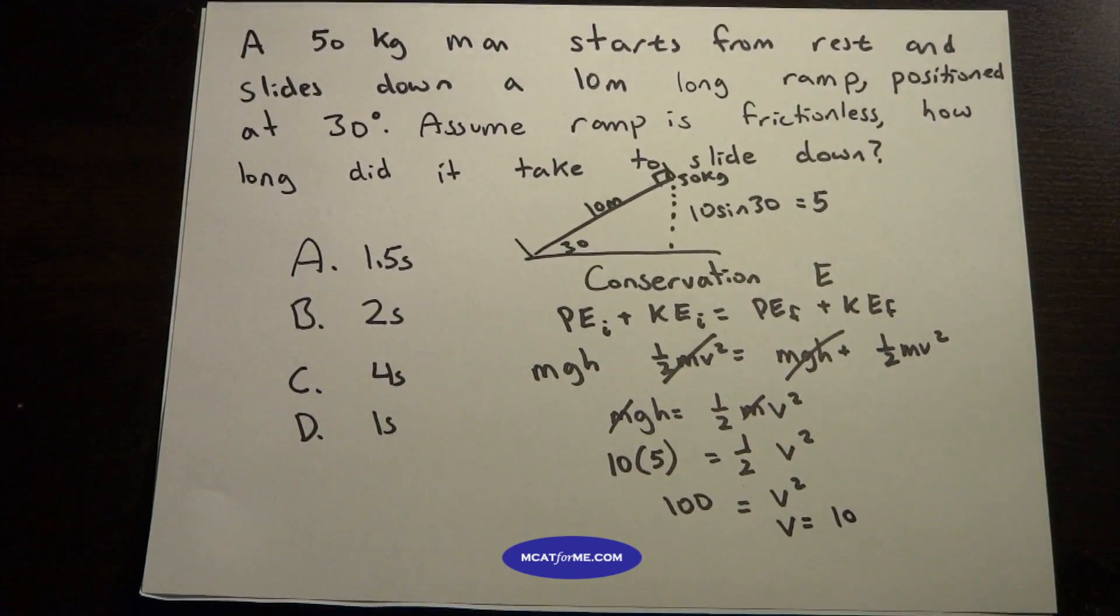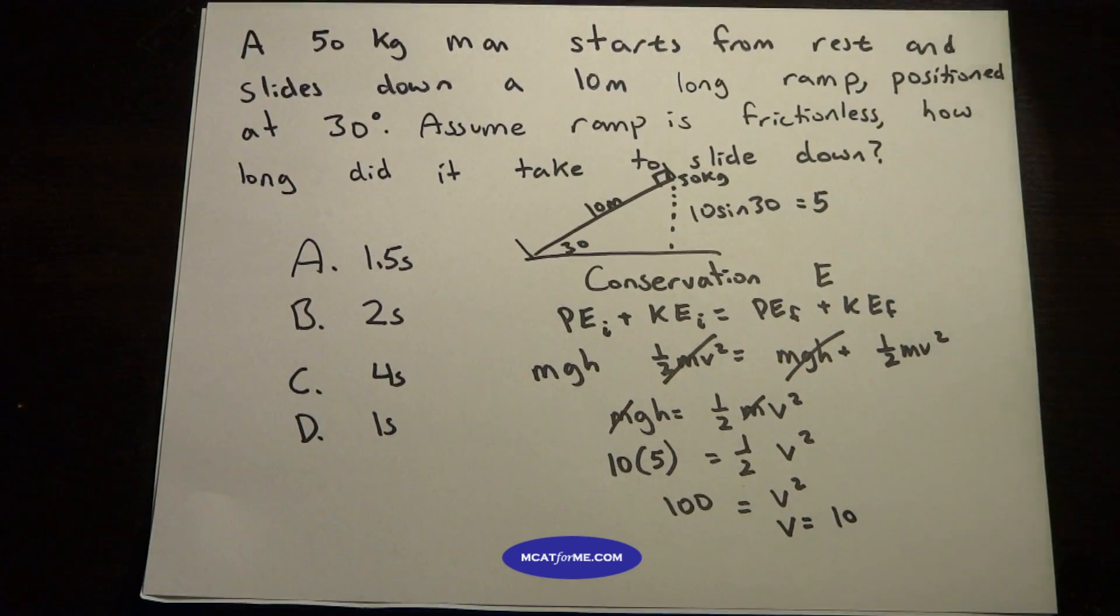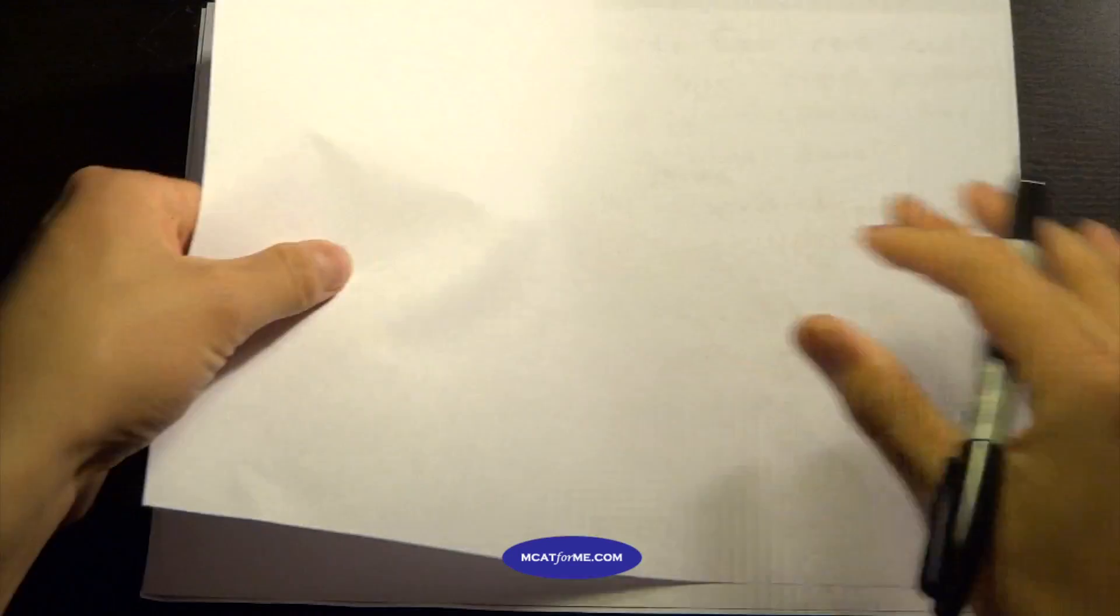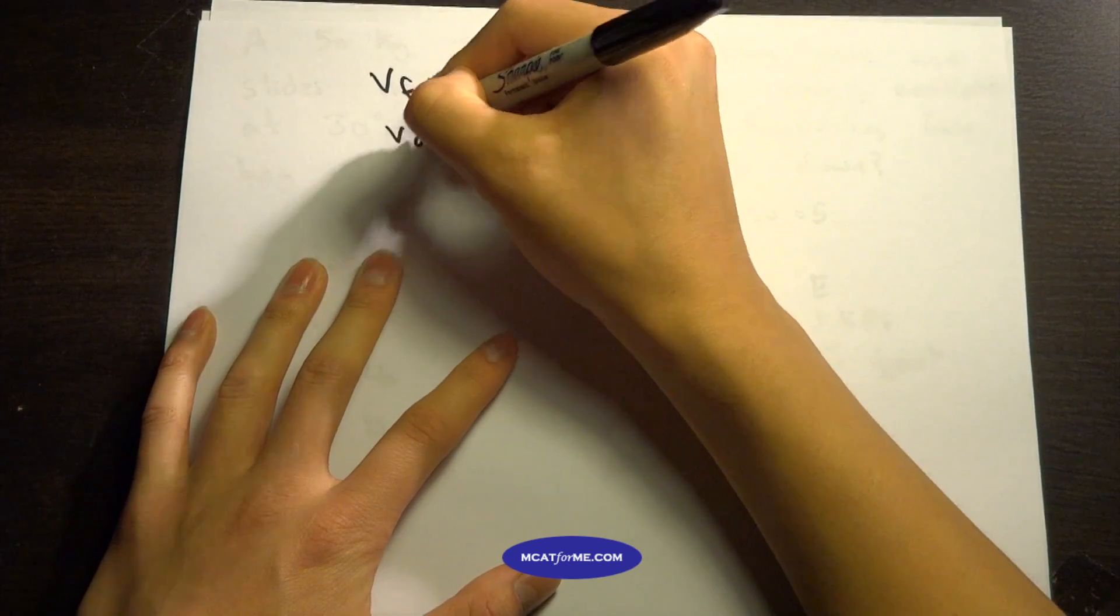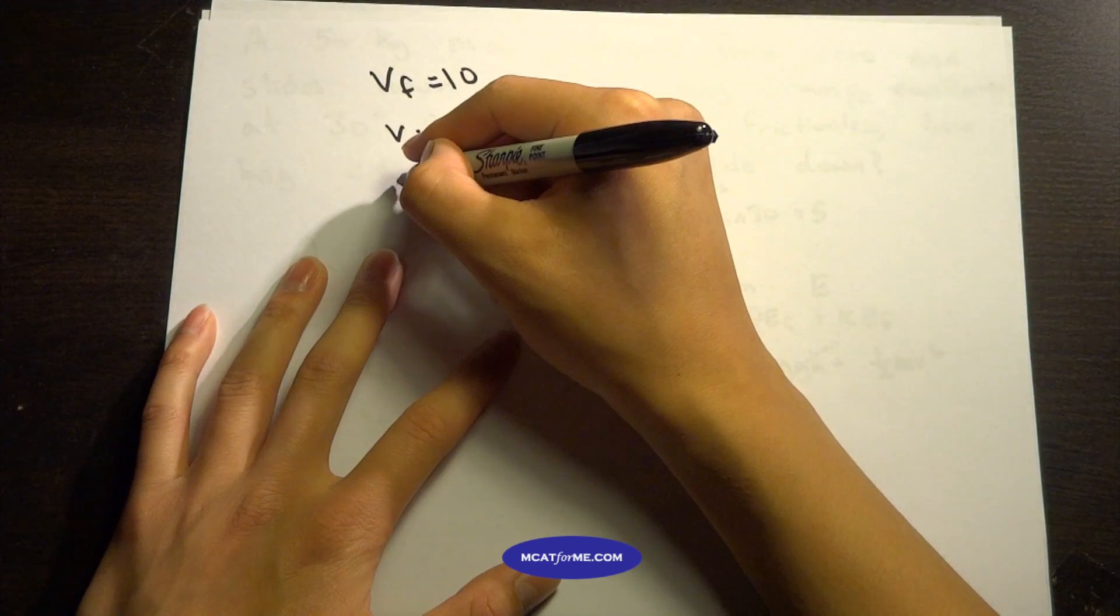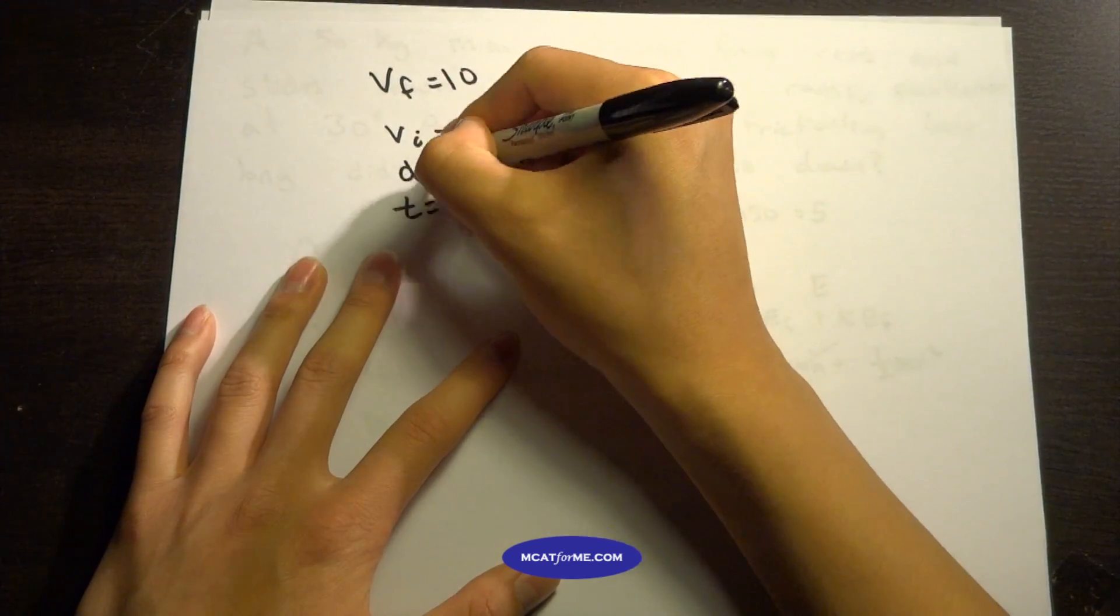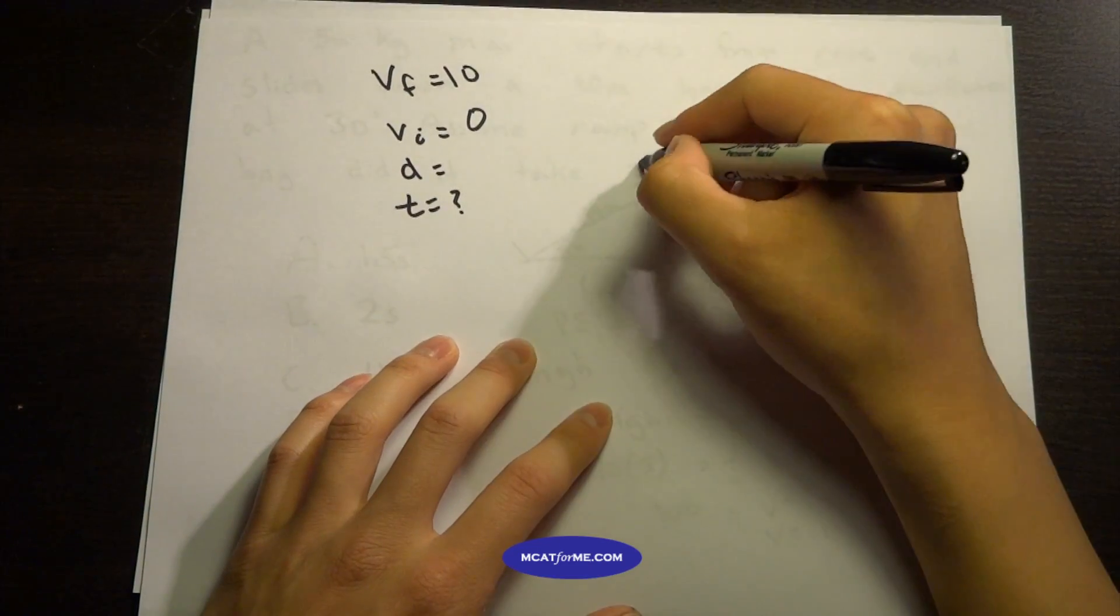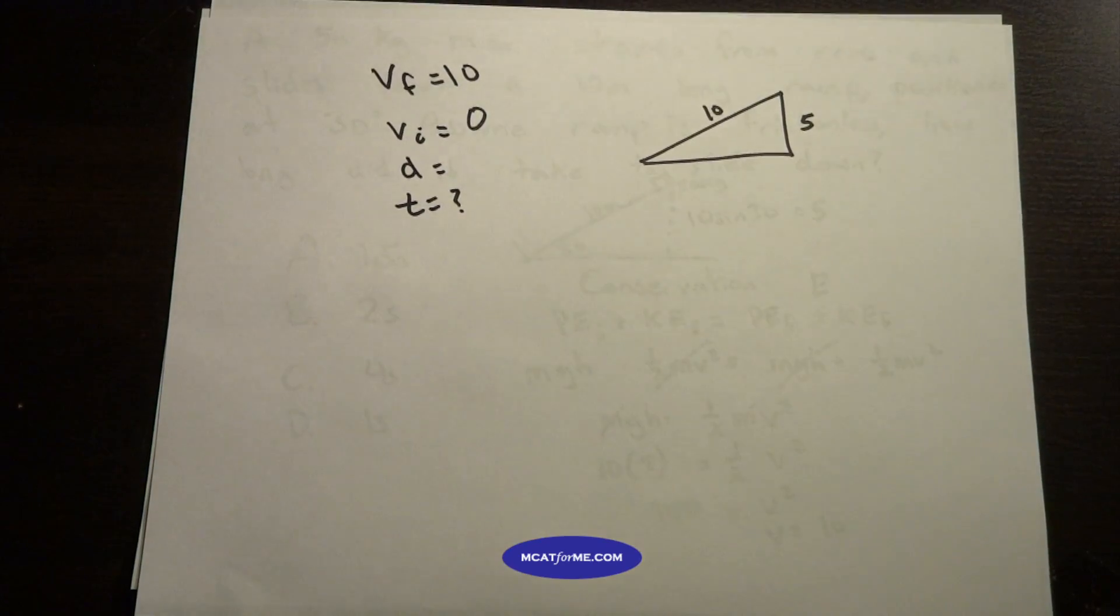So what do we do with this information? We have that v final equals 10, and we have v initial equals zero—we remember he started from rest. We want to find the time. What other piece of information do we have? Well, we know the distance. Remember from this, it's a 10 meter ramp that's 5 meters tall, so we know that the distance is 10.